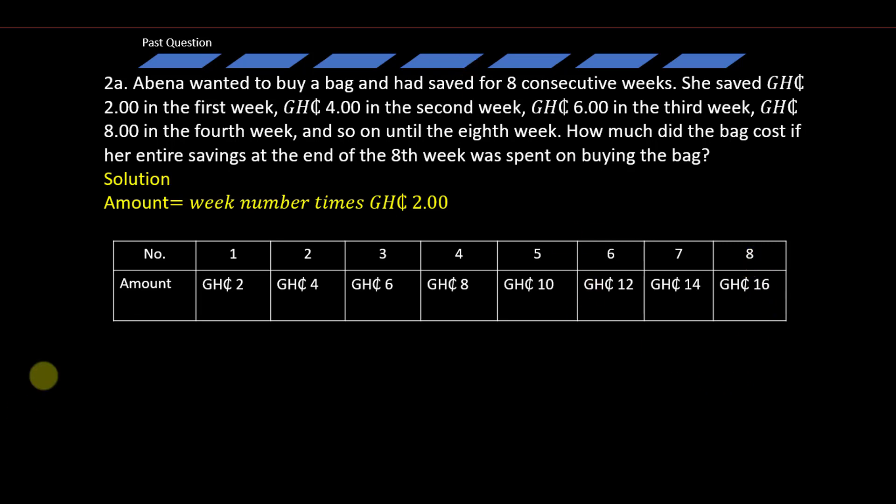Now what will be the total? We just have to sum all the contributions for each week. The total is simply going to be equal to 2 cedis plus 4 cedis plus 6 cedis plus 8 cedis plus 10 cedis plus 12 cedis plus 14 cedis plus 16 cedis, and that simply sums up to 72 Ghana cedis. So we can say that she contributed 72 Ghana cedis and the cost of the bag was 72 Ghana cedis, or better still, she spent 72 Ghana cedis on buying the bag.